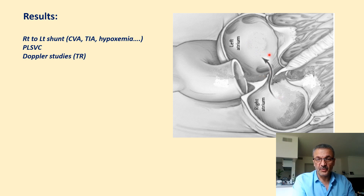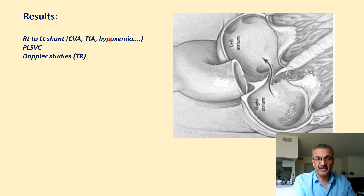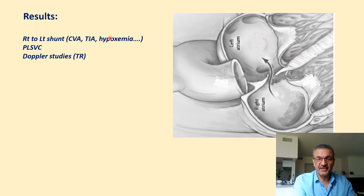In this case, microthromboses can go to the left side, and through that cause systemic embolism — such as CVA or TIA. And if the amount of blood shunted is too much, it can cause dropping O2 saturation on the left side and cause hypoxemia.